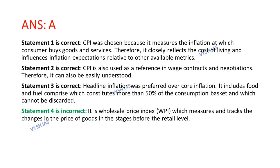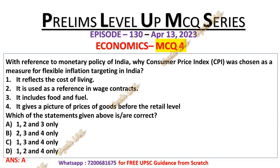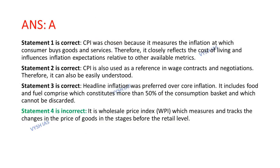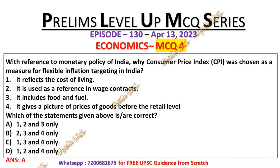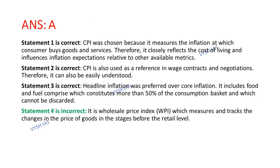Statement 3 is correct: headline inflation was preferred over core inflation. It includes food and fuel, which constitute more than 50% of the consumption basket and cannot be discarded. Statement 4 is incorrect because it basically deals with the Wholesale Price Index — the WPI gives a picture of the price of goods before the retail level. That is why statement 4 is the incorrect one.